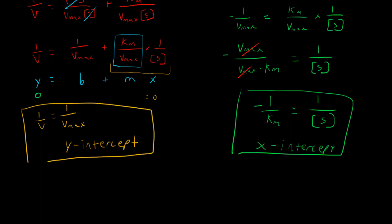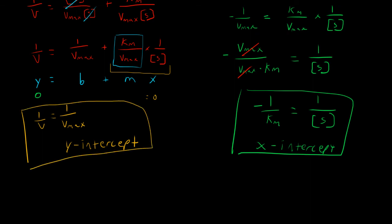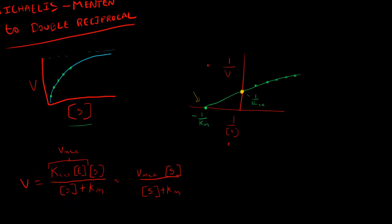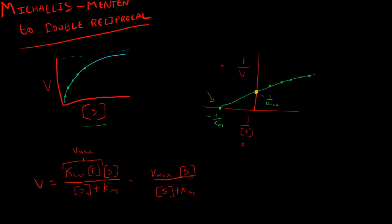So hopefully looking at the algebra, it makes a little more sense why we look at these double reciprocal plots and how we get this information. Now, moving back up to the graph, why do we even care about the double reciprocal plot? Why do we modify the data in this way to make it seem almost more complex?